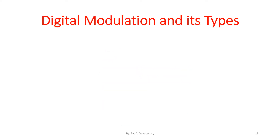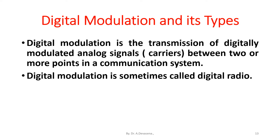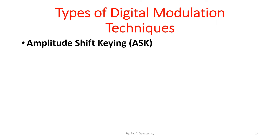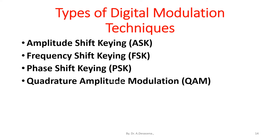Digital modulation is the transmission of digitally modulated analog signals, that is carriers, between two or more points in a communication system. It is sometimes called digital radio. The digital modulation techniques are broadly classified into amplitude shift keying (ASK), frequency shift keying (FSK), phase shift keying (PSK), and quadrature amplitude modulation (QAM).